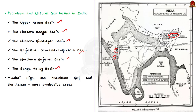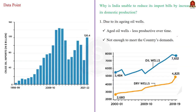Now let us see the analysis of the data point for your mains examination. India is the third largest consumer of oil, but the country failed to increase its domestic production. Because of this, when crude oil prices in international markets increased, India's import bill grew significantly. India's import bill for crude oil stood at $120.4 billion in financial year 2022.